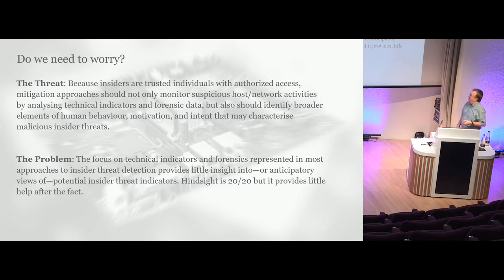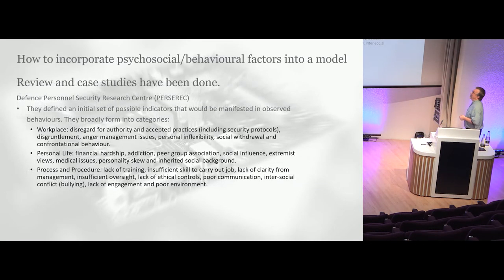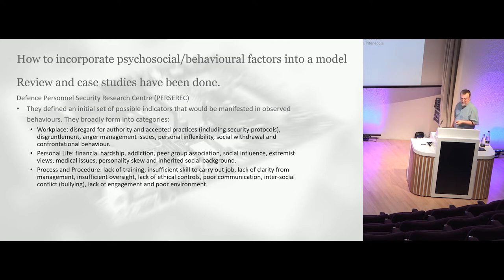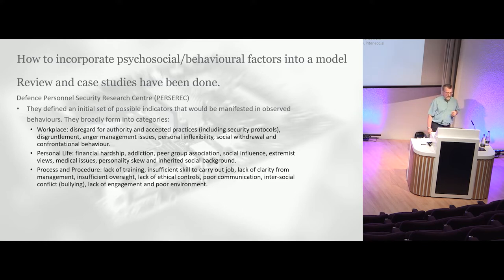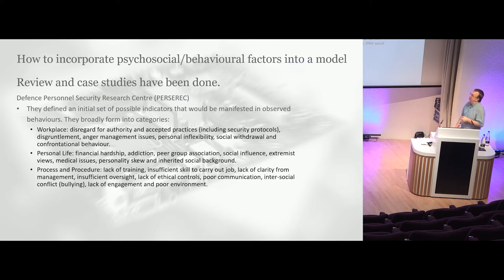It's easy to say that hindsight is 20-20, but what this framework is attempting to do is give you some insight into who might turn rogue. This actually comes out of some very old work from a military background. They defined an initial set of things that you would look for in a threat actor — things that might impact them, such as their workplace environment, their personal life, the pressures on them, as well as the processes and procedures run by a company that control their workflow and actions.